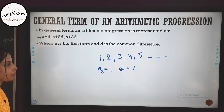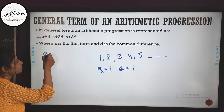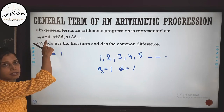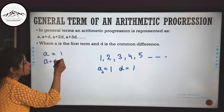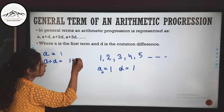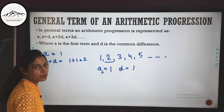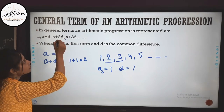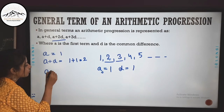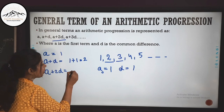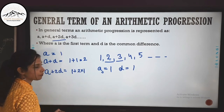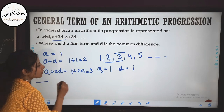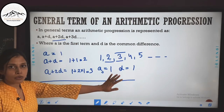Our first term is A equals 1. The second term is A plus D, which is 1 plus 1 equals 2. The third term is A plus 2D, which is 1 plus 2 times 1 equals 3, and so on. In this way, we can find the terms of an arithmetic progression.